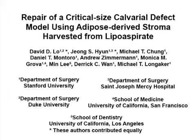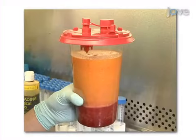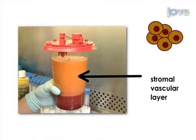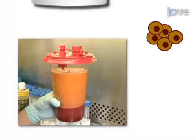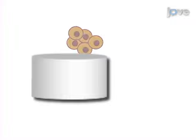This is accomplished by first isolating progenitor cells from the stromal vascular layer of adipose tissue, which can be obtained following a liposuction procedure. The next step is to prepare a three-dimensional backbone and then seed the cells onto that scaffold.